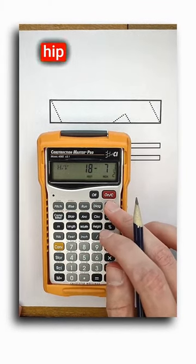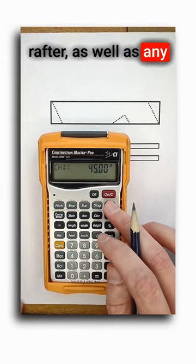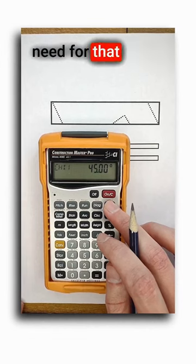Now pushing the hip valley button will give me the length of the hip or valley rafter as well as any plumb or level cuts I need for that rafter.